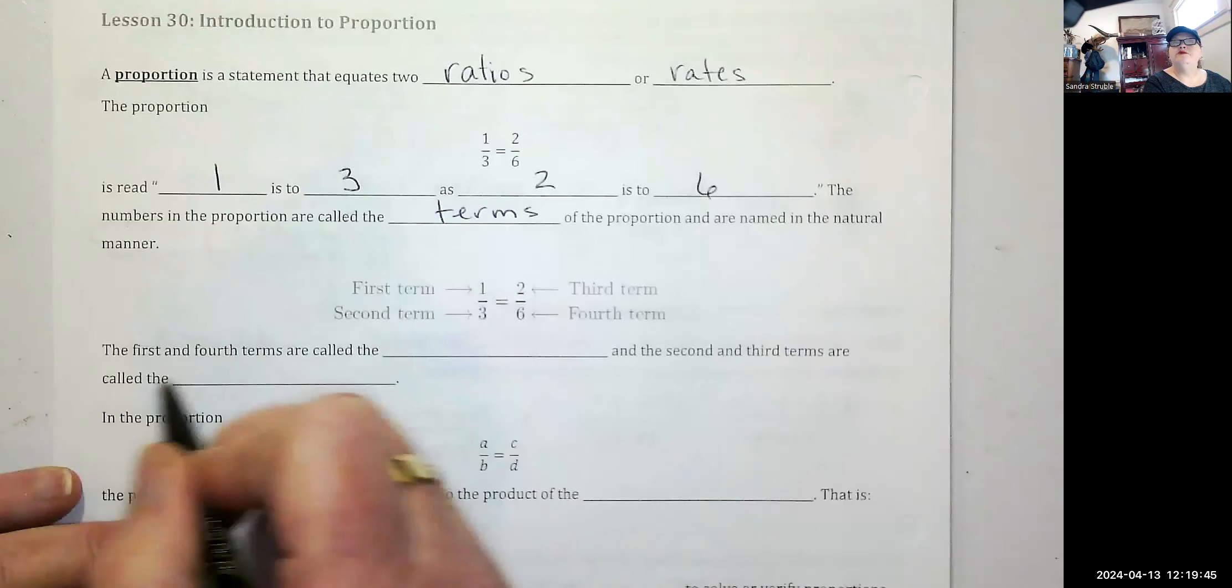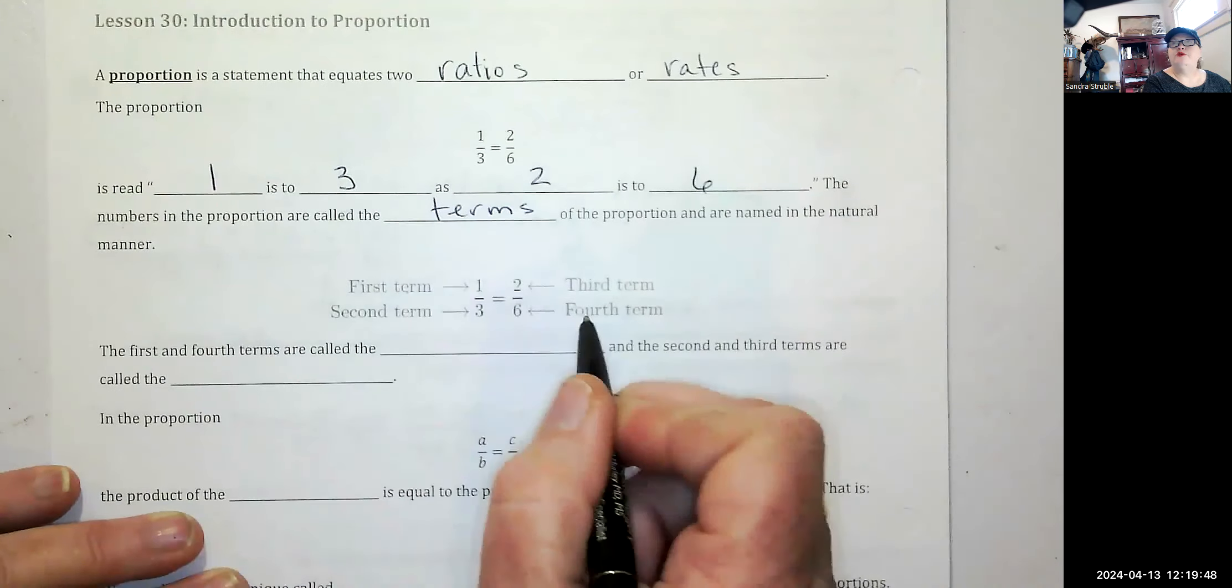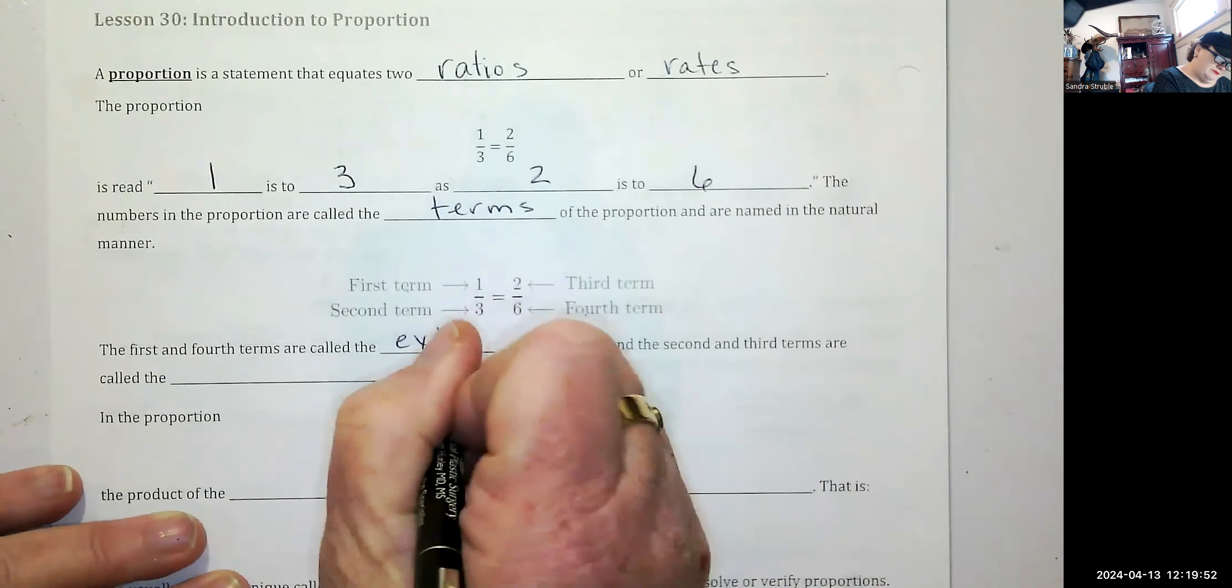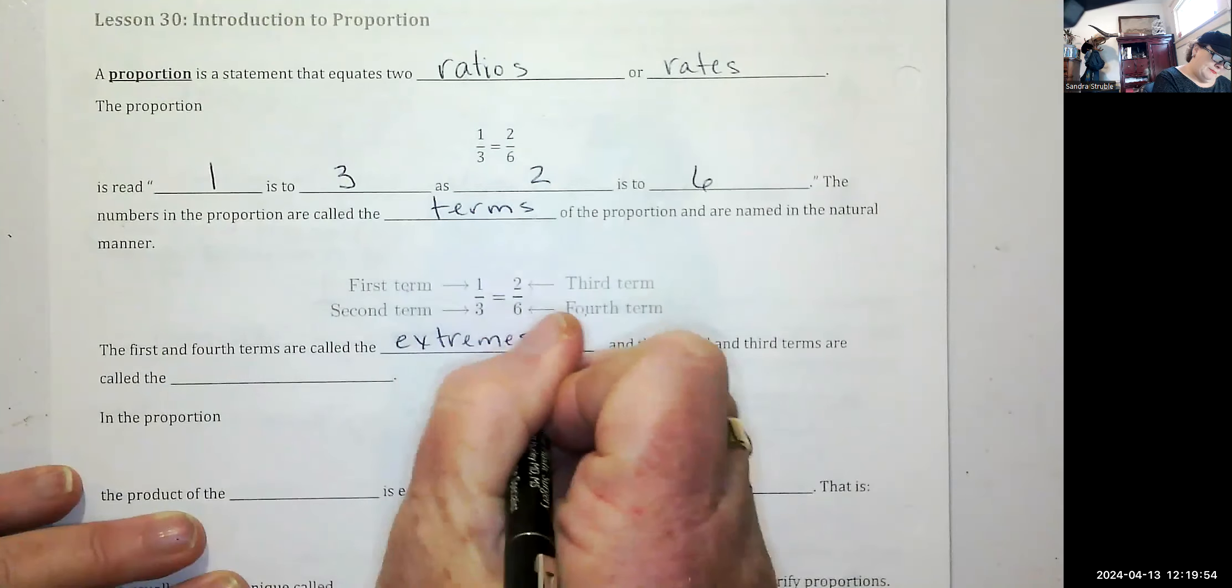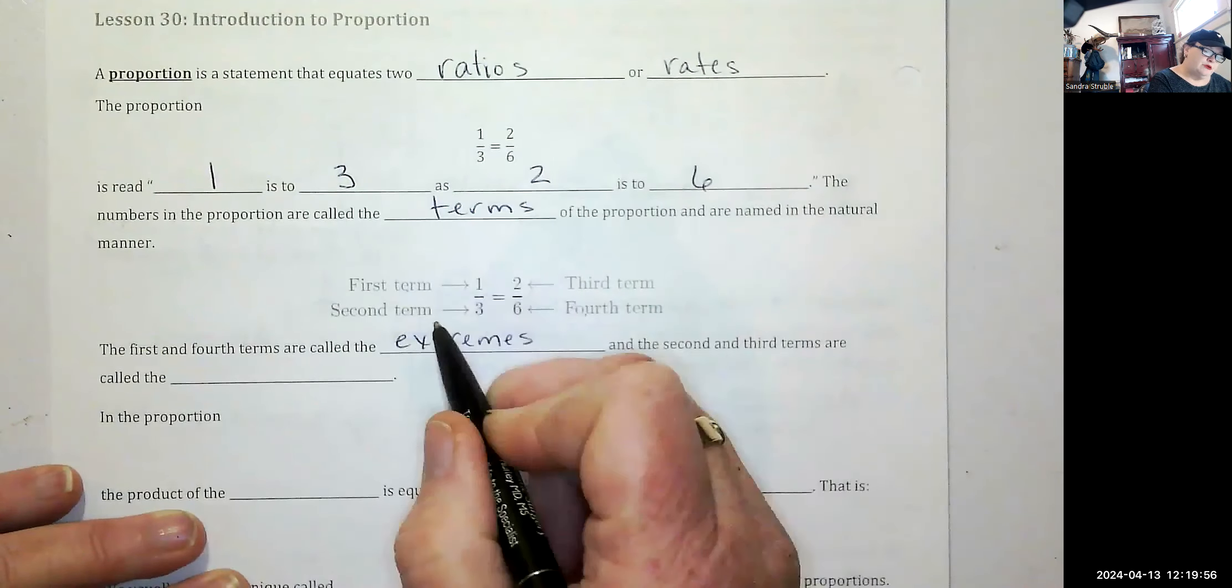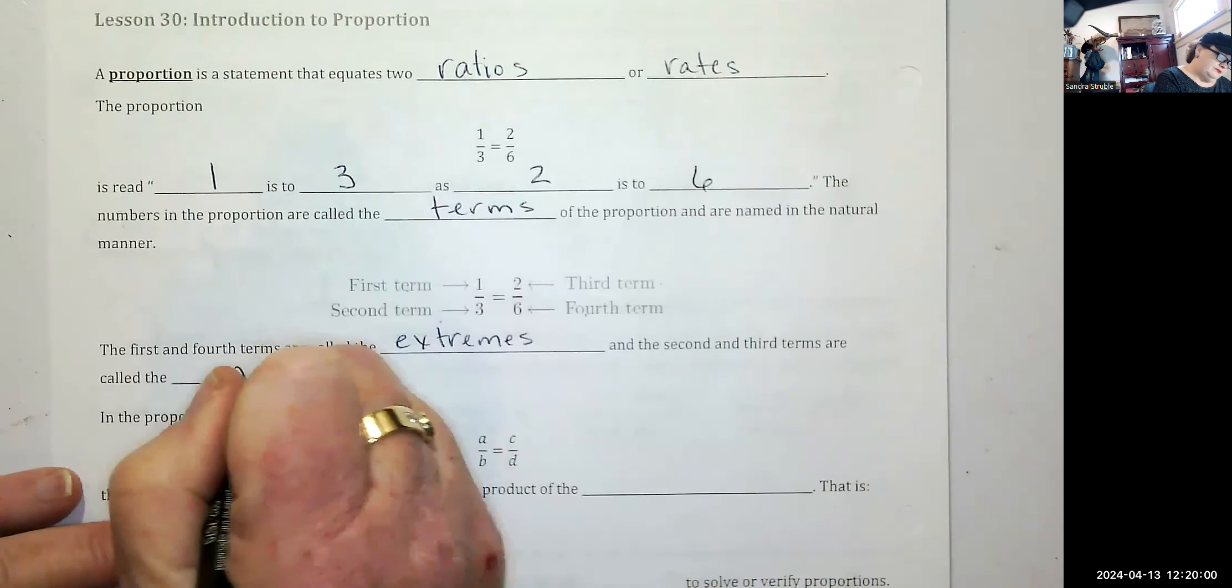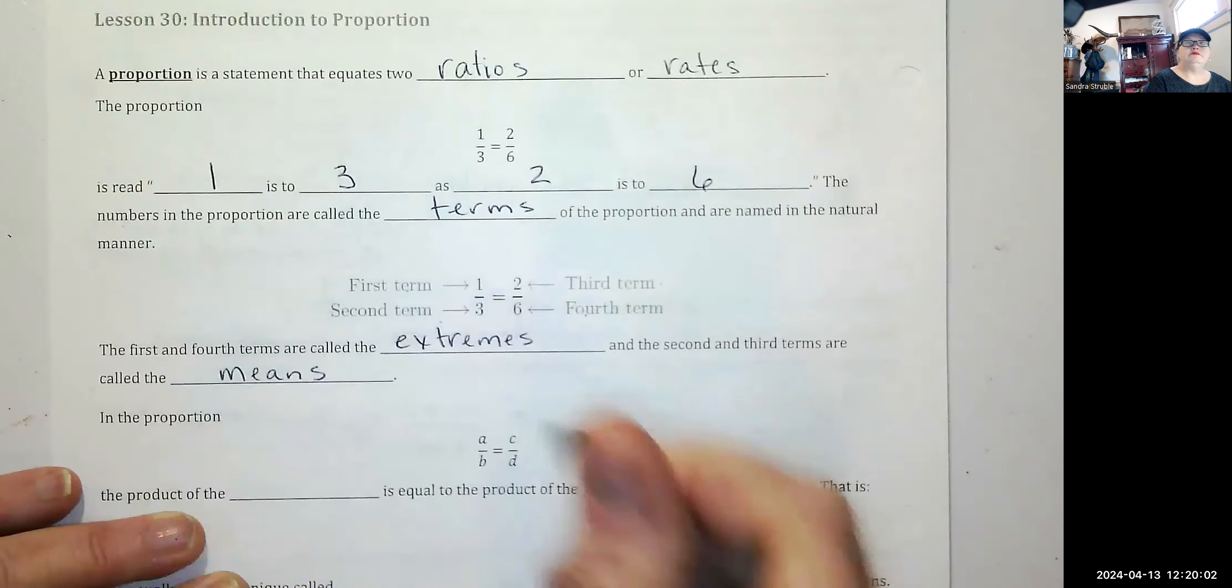The first and fourth terms are called the extremes, and the second and third terms are called the means.